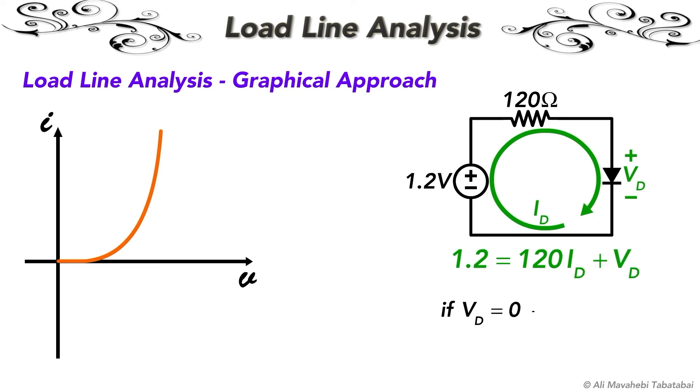If I set VD to 0, the diode current will be equal to the Thevenin's voltage divided by R. Also if I set ID equal to 0, the diode voltage will be equal to the Thevenin's voltage. And by connecting these two points, I can draw the load line on diode current voltage characteristics plane.